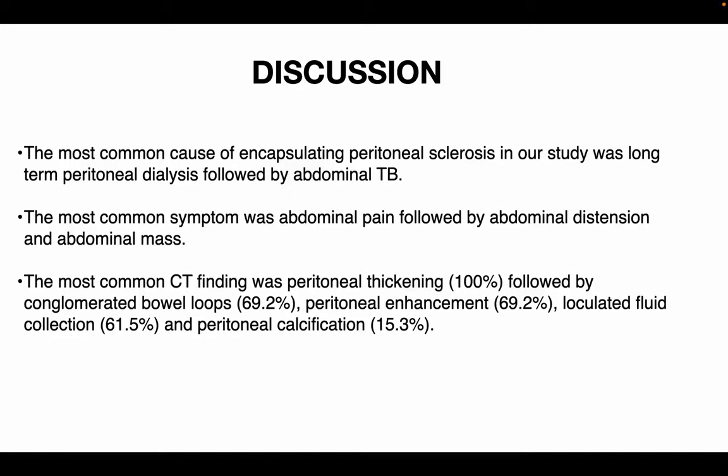The most common cause of encapsulating peritoneal sclerosis in this study was long-term peritoneal dialysis, followed by abdominal TB. The most common symptom was abdominal pain, followed by abdominal distension and abdominal mass. The most common CT finding was peritoneal thickening, followed by conglomerated bowel loops, peritoneal enhancement, loculated fluid collection, and peritoneal calcification.